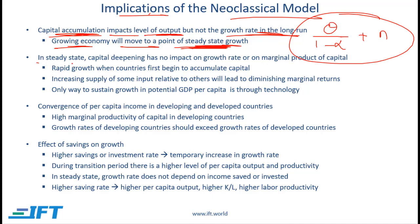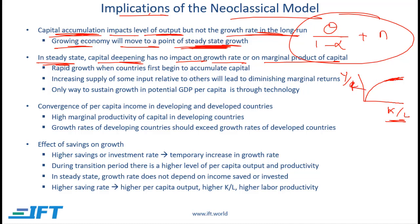The next implication is that in steady state, capital deepening has no impact on the growth rate or on the marginal product of capital. This goes back to the point that with the Cobb-Douglas function we have diminishing returns. If capital per labor is increased, eventually output per labor will go up but at a decreasing rate. There might be rapid growth initially — when countries like China or India start with a relatively low amount of capital, the growth can be rapid — but eventually we will get to steady state. In the long run, the only way to sustain growth in potential GDP per capita is through technology.